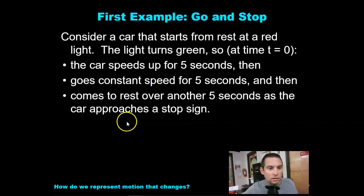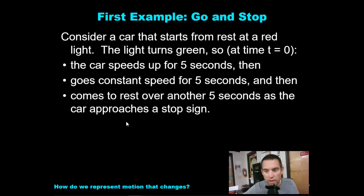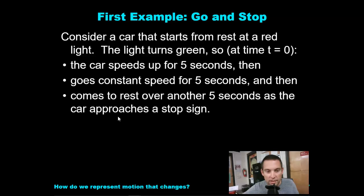As promised, if we consider a car that starts from rest at a red light, the light turns green at time t equals zero, the car speeds up for five seconds, then goes at constant speed for five seconds, and then comes to rest over another five seconds as the car approaches a stop sign.